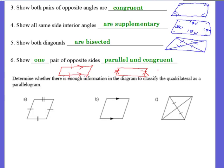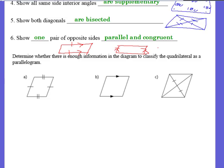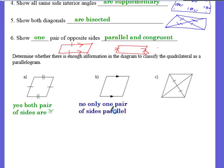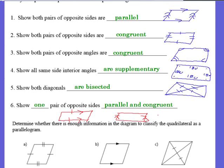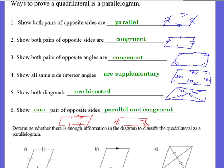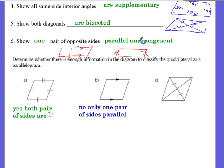Here are some example problems: determine whether there's enough information to classify the quadrilateral as a parallelogram. This first figure — yes, because both pairs of sides are congruent. This second figure — no, because we only have one pair of sides marked parallel, and I either need both pairs to be parallel, or one pair to be both parallel and congruent; since it's not marked congruent, we can't assume that. And this last figure — no, because only one diagonal is getting bisected.